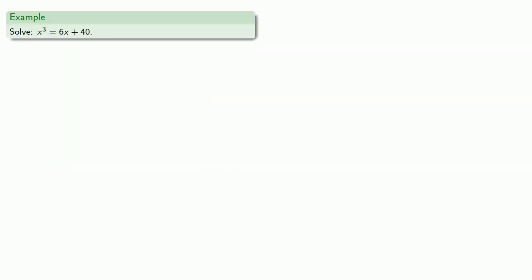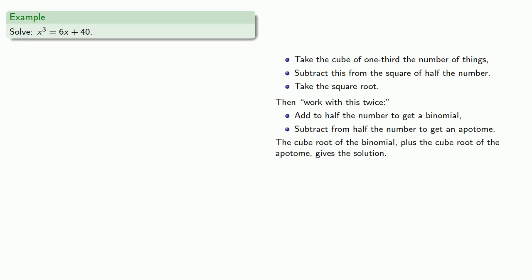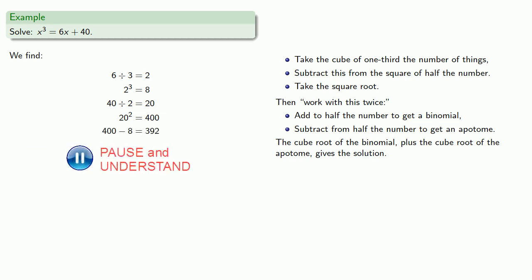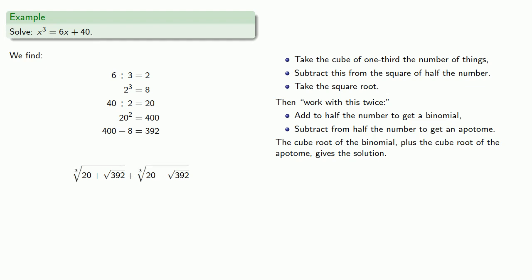Cardano gives the example x³ = 6x + 40. We find the cube of one-third the number of things — that's the coefficient of x — so one-third of 6, cubed. We also need the square of half the number: the number is 40, half is 20, squared is 400. We subtract: 400 - 8 = 392. We take the square root of 392, work with it twice: add to half the number to get the binomial, subtract from half the number to get the apotome. The cube root of the binomial plus the cube root of the apotome gives the solution.